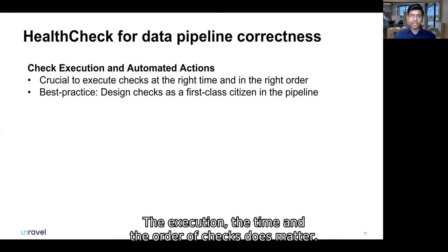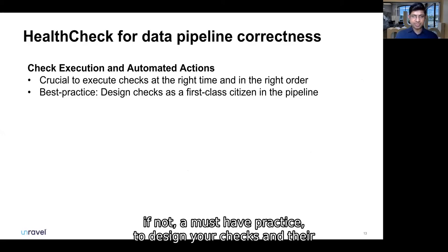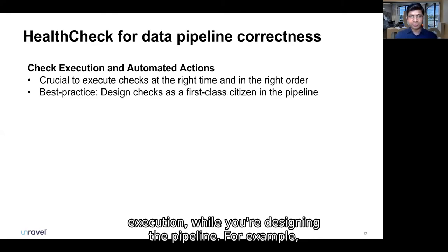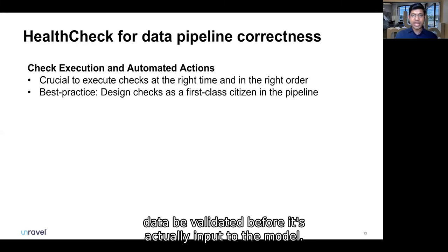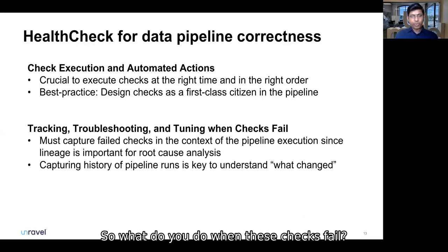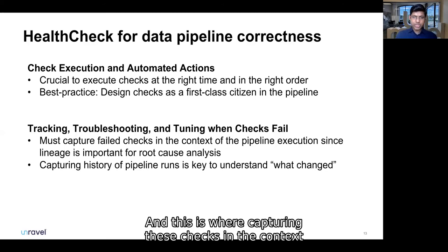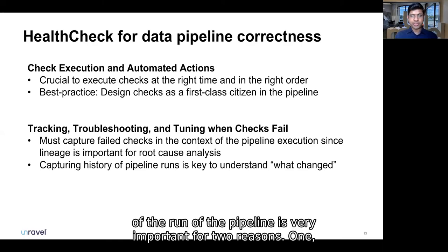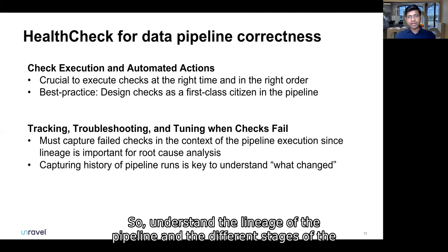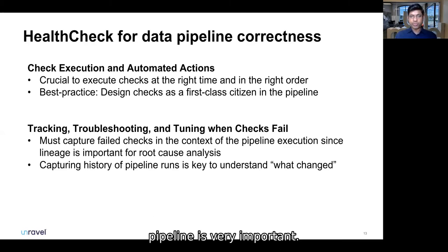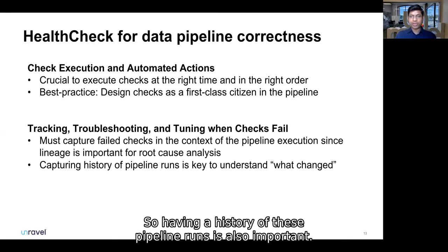The timing of check execution matters, and it's a good practice — if not a must-have — to design your checks and their execution while you're designing the pipeline. For example, it might be crucial for the correctness of a machine learning model that data is validated before it's input to the model. When these checks fail, you have to troubleshoot and fix the problem. Capturing these checks in the context of the pipeline run is very important for two reasons: the root cause might lie upstream in the pipeline, so understanding lineage is very important; and a lot of the time checks fail because something changes, so having a history of pipeline runs is also important.